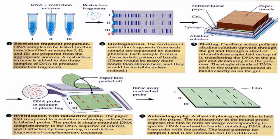Now the procedure of Restriction Fragment Length Polymorphism. Here we take three samples, of which two are control samples and the third one is a mutated sample. When we take this DNA in an Eppendorf tube, we are going to add restriction enzymes which will cut the DNA at a particular sequence. These restriction fragments from each sample are then separated by electrophoresis.